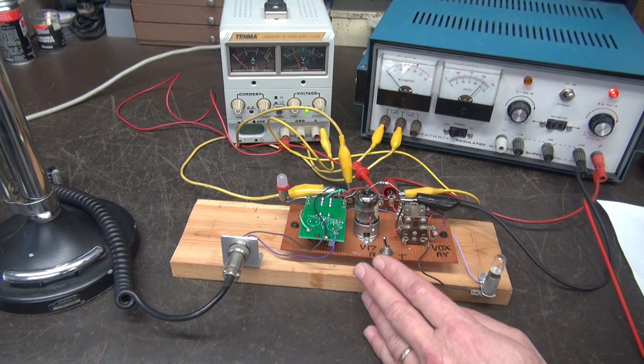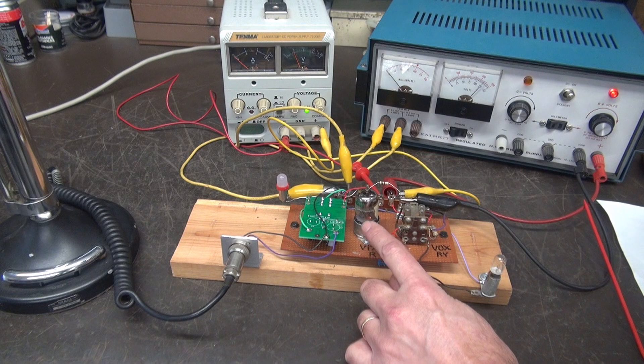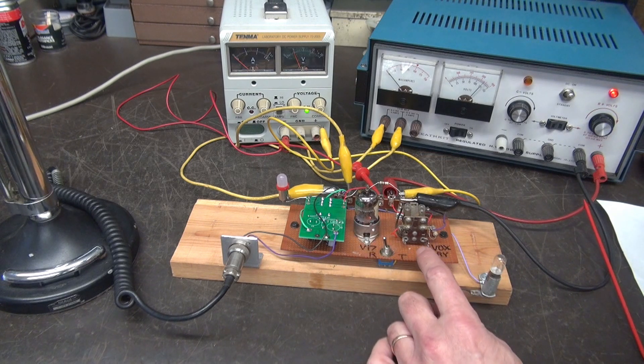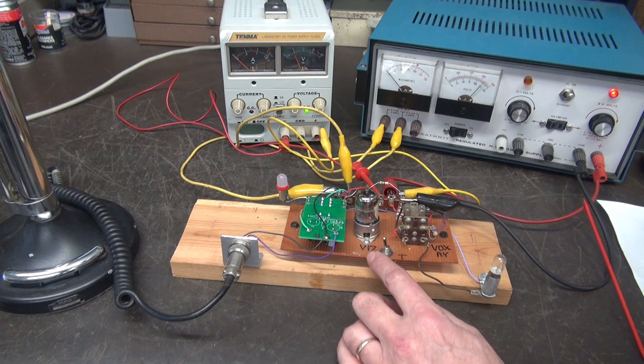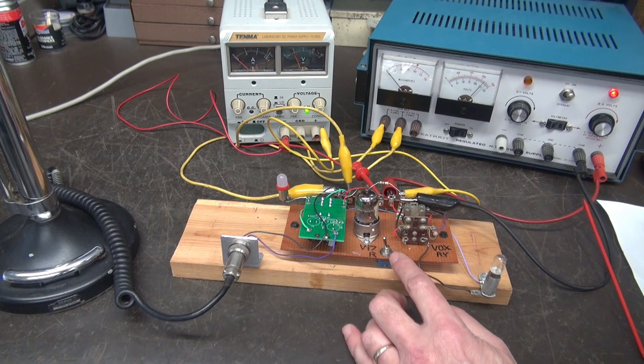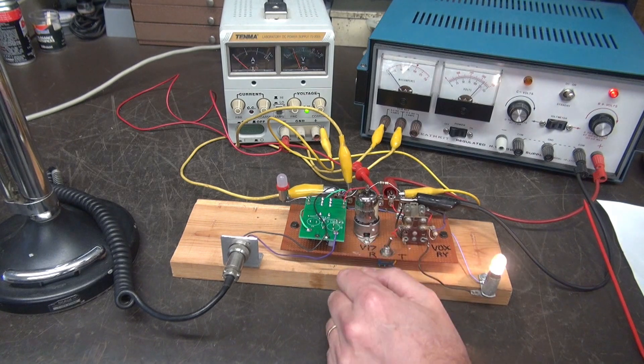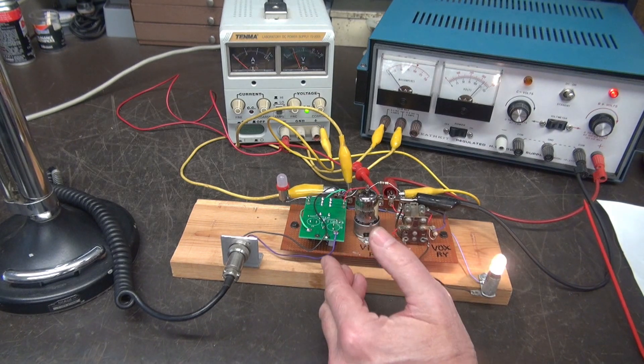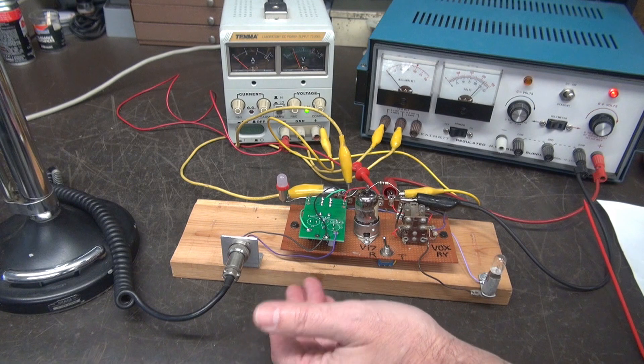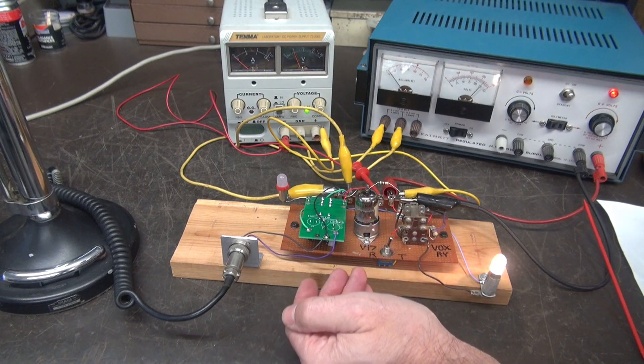All right, so first let's simply key the 12AT7 tube which pulls in the VOX relay using the receive transmit function. So what this is doing is toggling negative voltage to that tube. So that is the normal operation when you're talking and receiving with the HT32.